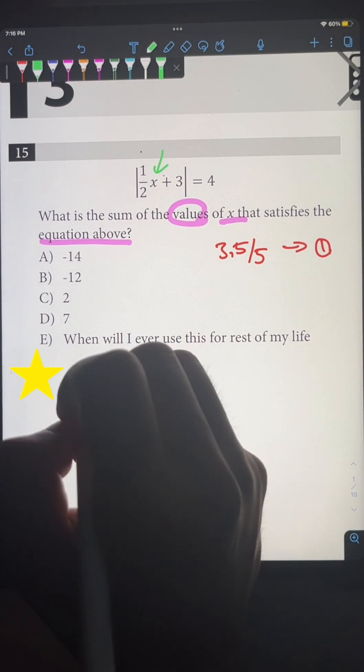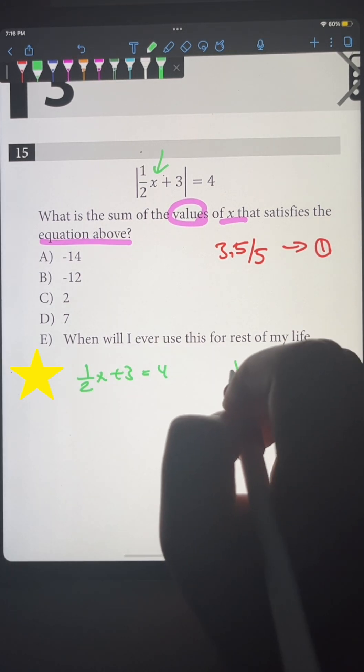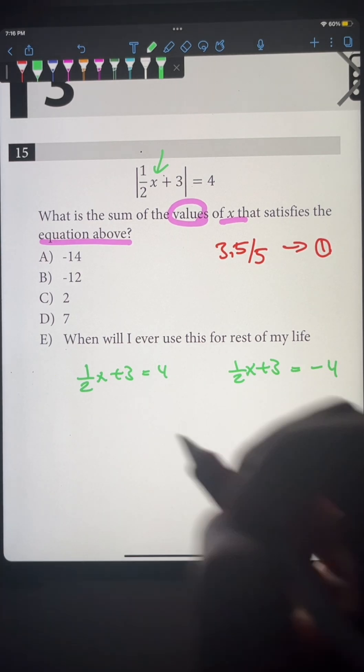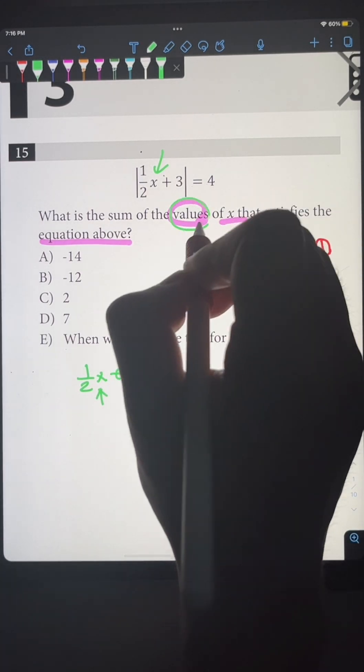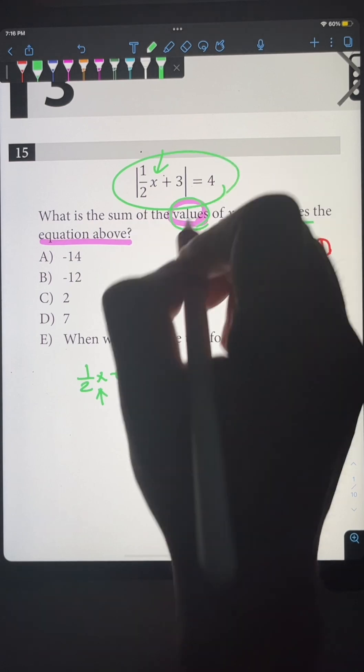So what you're going to do instead is create two separate versions: ½x + 3 = 4, and ½x + 3 = -4. You're going to simply solve for x, and that's going to give us the values of x that satisfy this equation.